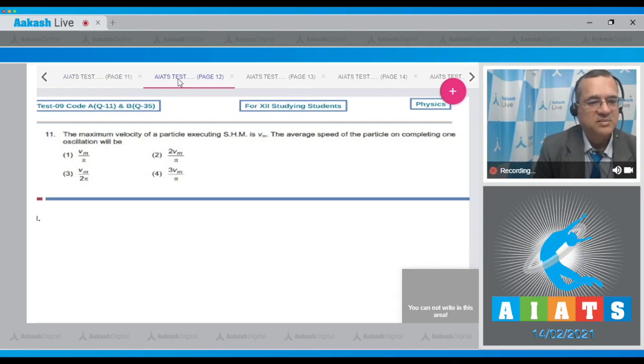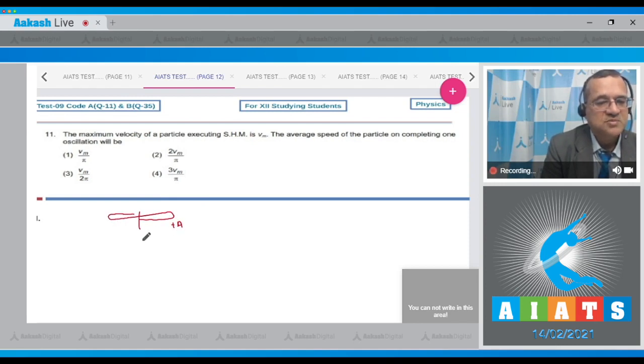Question number 11: The maximum velocity of a particle executing SHM is Vm. The average speed of the particle on completing one oscillation is - four options. When it completes one oscillation, it moves from 0 to a, then from a to 0, and back to minus a.